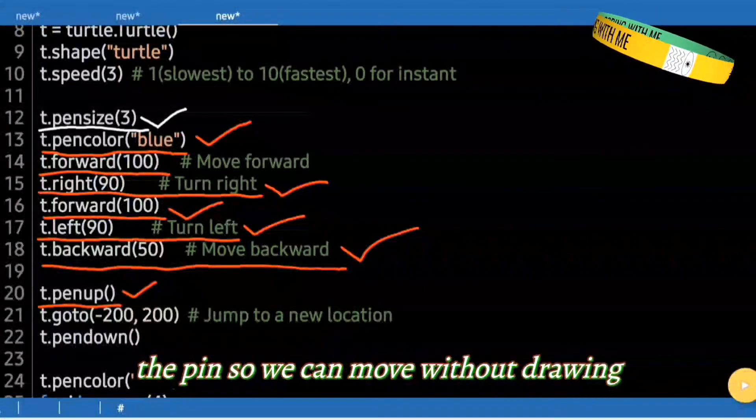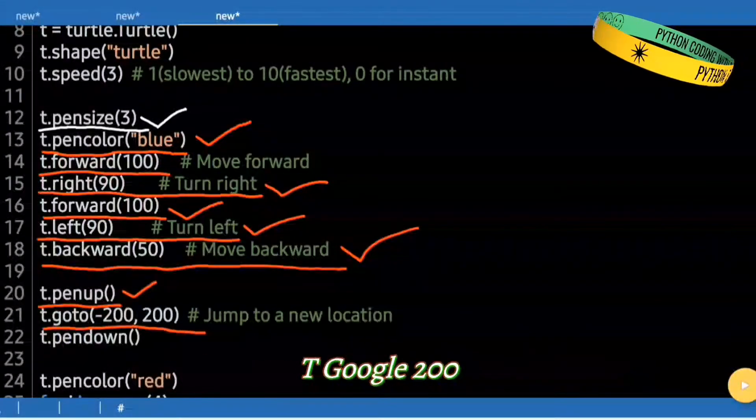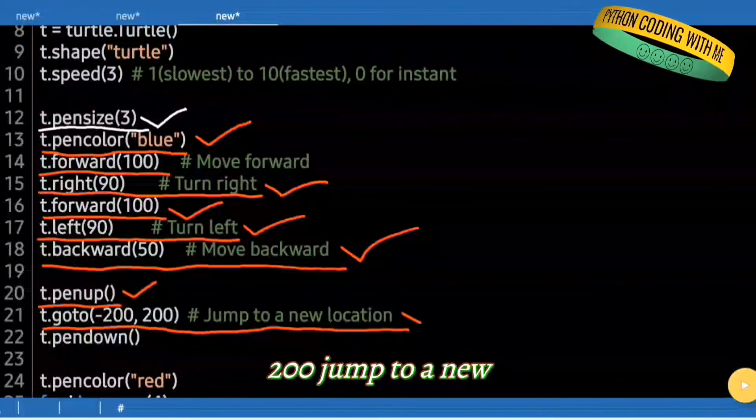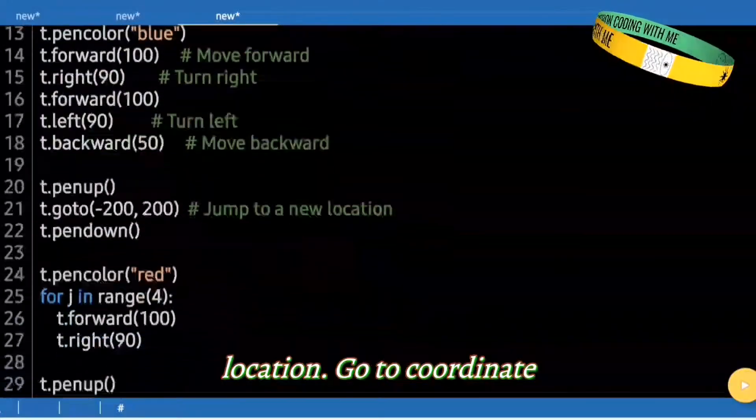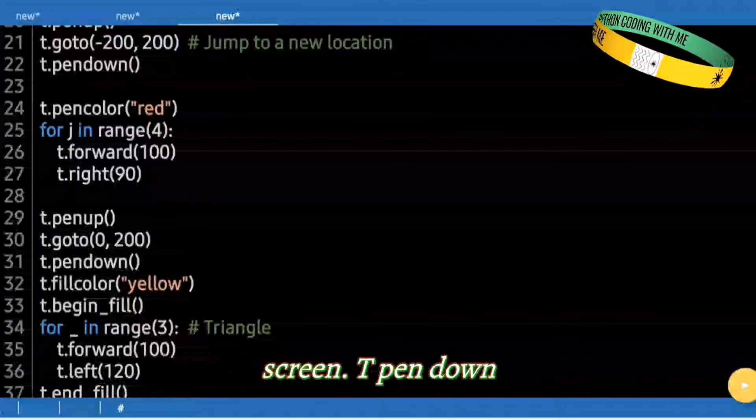Lift the pen so we can move without drawing. t.goto(-200, 200). Jump to a new location. Go to coordinate negative 200, 200. Jump across the screen.